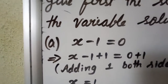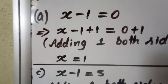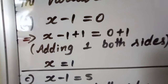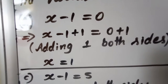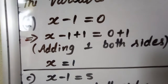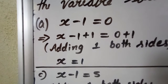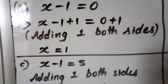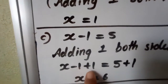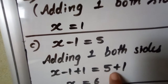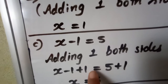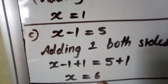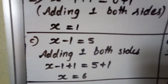Question C: x minus 1 is equal to 5. Here also x minus 1 is there, so if we add plus 1, we get only x on the left side — we need to make the other terms 0 to separate the variable. Adding 1 to both sides: x minus 1 plus 1 equals 5 plus 1. Minus 1 plus 1 becomes 0, and 5 plus 1 becomes 6. So x is equal to 6.